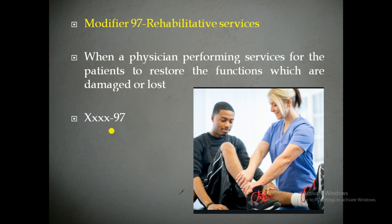Modifier 97 is Rehabilitative Services. Modifier 97 is used when a physician is performing services to restore the functions which are damaged because of some injuries or illness. Those services are rehabilitative services — the functions are being restored. The key difference between habilitative and rehabilitative is that habilitative services are performed for the first time, whereas rehabilitative services are restored services.